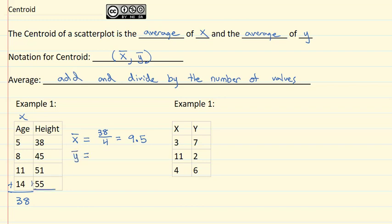Then we'll find the average y by adding up the heights, adding up our y column. 38 plus 45 plus 51 plus 55 is going to come out to be 189. So we'll take the 189 divided by the four points and we get 47.25. So our centroid x bar y bar is equal to the point 9.5 comma 47.25.